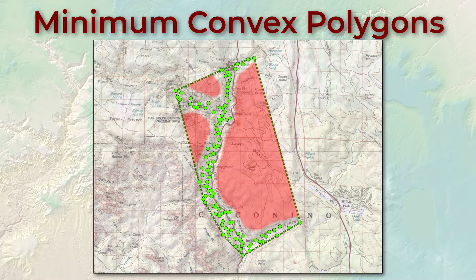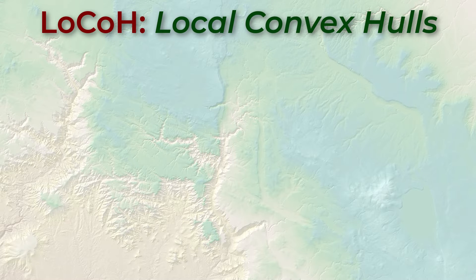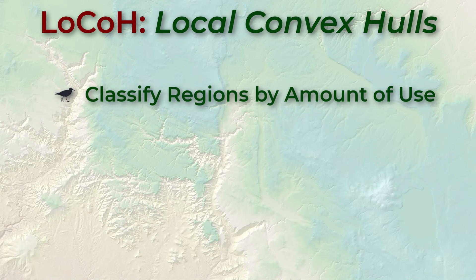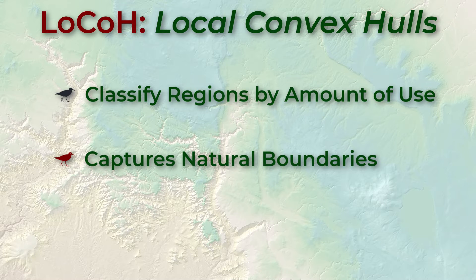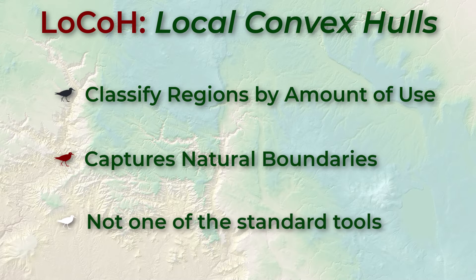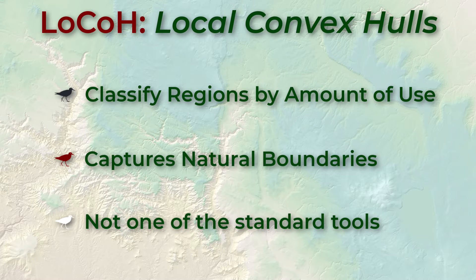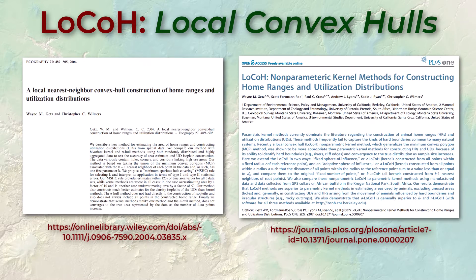There is an interesting variation on the standard MCP approach that does reasonably well at excluding areas the animal doesn't use and even distinguishes between areas with different levels of use. This method, called LoCoH for local convex hulls, allows you to classify regions according to how many of the points are captured and does a good job at finding areas with high and low use. It also captures natural boundaries and obstacles on the landscape. Unfortunately this method is not one of the standard tools in ArcGIS Pro, so we're not going to try it in the lab, but the methods are straightforward if you're up to writing code — I've got the original papers by Getz available for you to download.